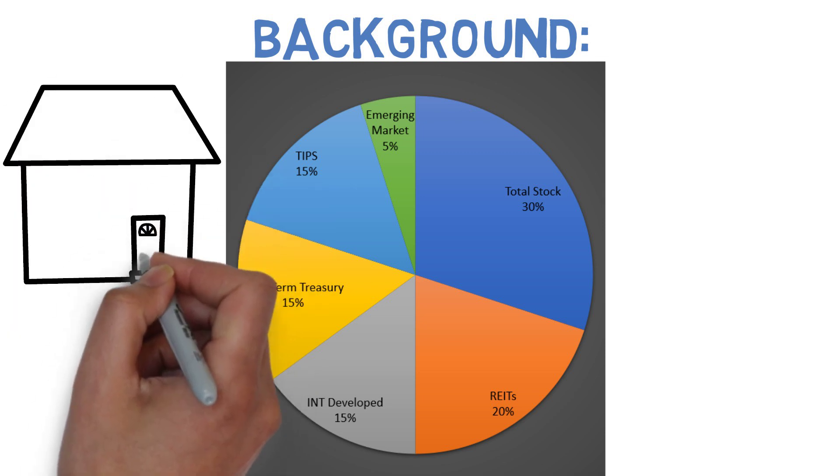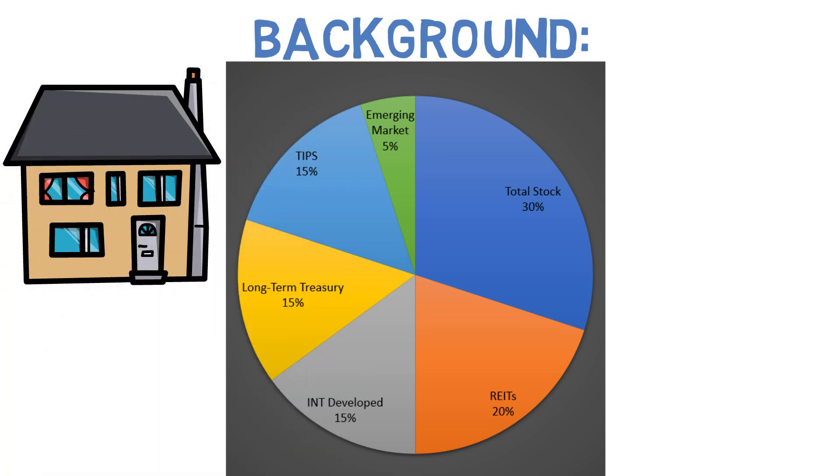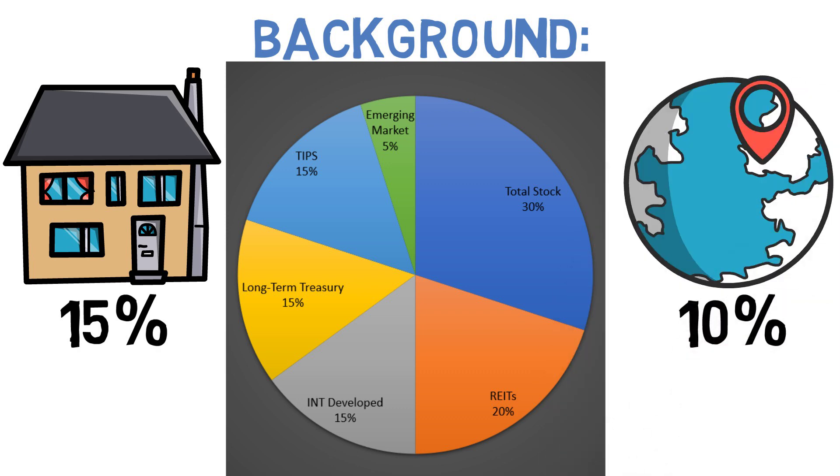And the final 5% goes to an emerging market fund. I should note that some do use slightly different percentages such as cutting REITs down to 15% and raising emerging markets to 10% and others swap in intermediate or even short term treasuries in place of long term treasuries. However, this is the most common allocation I see for the Swenson portfolio so it's what I'm going to use for today.